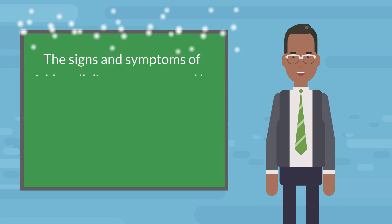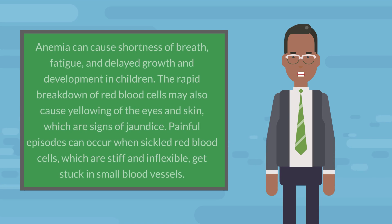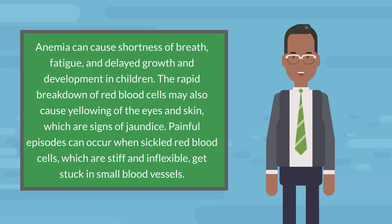The signs and symptoms of sickle cell disease are caused by the sickling of red blood cells. When red blood cells sickle, they break down prematurely, which can lead to anemia. Anemia can cause shortness of breath, fatigue, and delayed growth and development in children. The rapid breakdown of red blood cells may also cause yellowing of the eyes and skin, which are signs of jaundice.